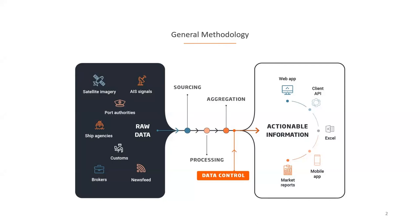These sources include AI signals, port authority reports, ship agencies, etc. After the data is sourced, processed and aggregated, we deliver it to our users in an understandable way so that they get a clear picture of the market. What our users see is a reassembled puzzle of the market, either through the web or mobile app, or through API or Excel add-in. This full process is mainly done in an automated way and in real time thanks to artificial intelligence technology, and in addition we have a team of data analysts who control and help improve this process on a permanent basis.